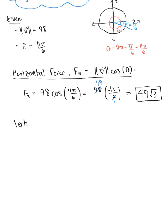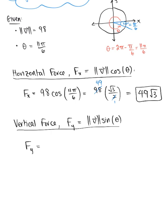Now we find the vertical force. F sub y equals the magnitude of vector V times sine of theta, so F sub y equals 98 multiplied by sine of 11 pi over 6. We want to recall that this angle is in quadrant 4, so sine of 11 pi over 6 simplifies to negative one half. Since 2 goes into 98 forty-nine times, our vertical force is negative 49 — we don't want to forget that negative.